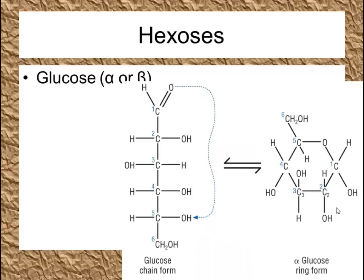Here is our glucose. You don't need to know the straight chain form at OCR, but the significance is that it can curl up — the oxygen can react with the oxygen on the fifth carbon, forming a ring shape. This ring shape can happen in two ways. This is the alpha glucose ring form. On the fourth carbon the OH points down, and on the first carbon the OH also points down. The carbons are numbered one through six going around the ring. So in alpha glucose, OH points down on carbon one and OH points down on carbon four.